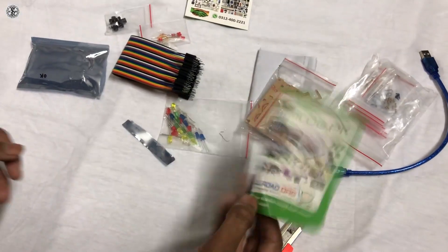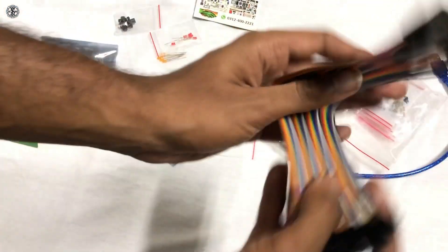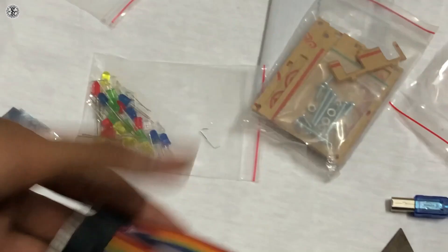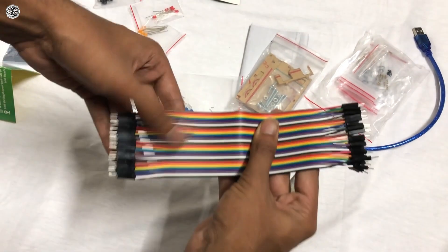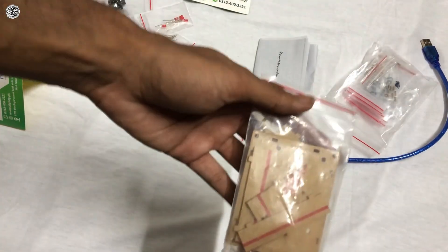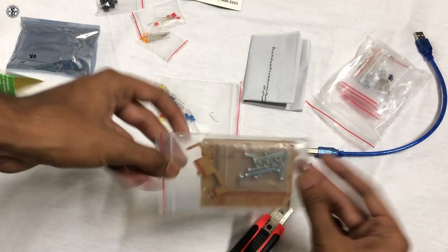This is the sticker of Electronics Company. These are male-to-male jumper wires. This is the case for Arduino Uno R3.